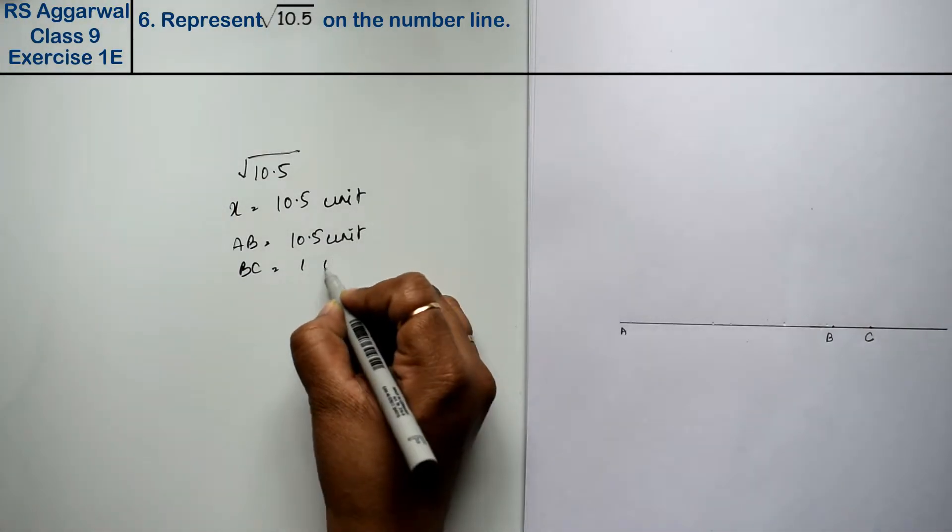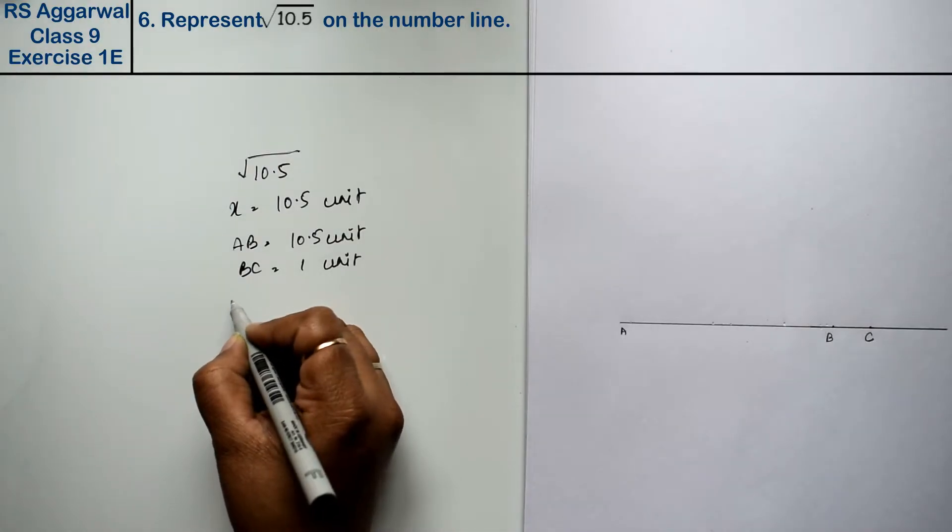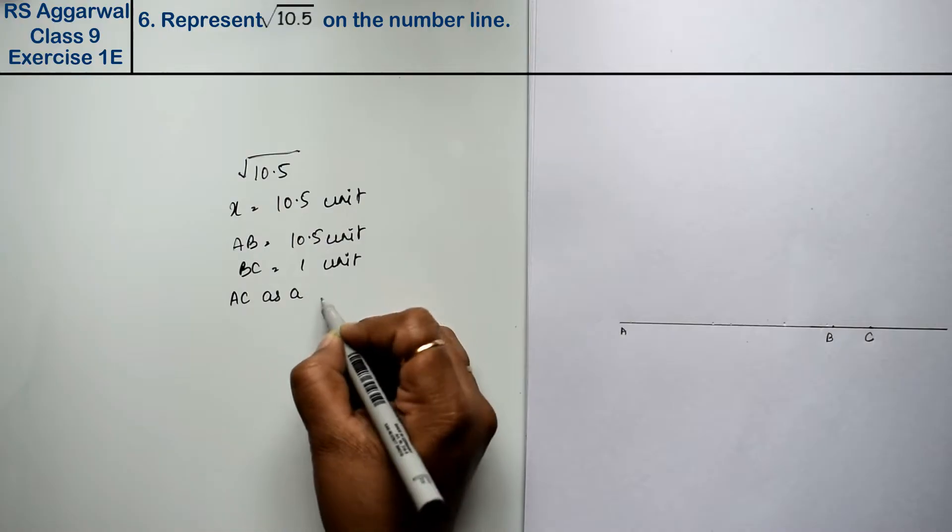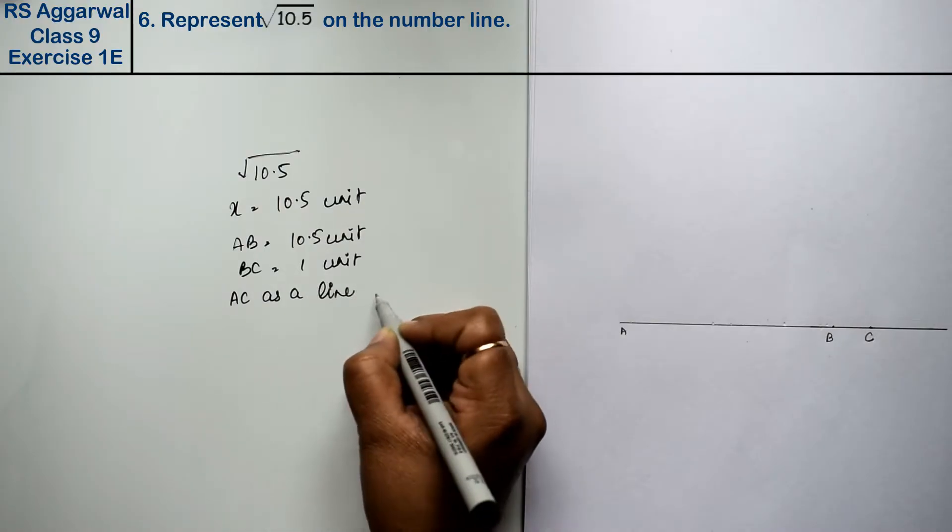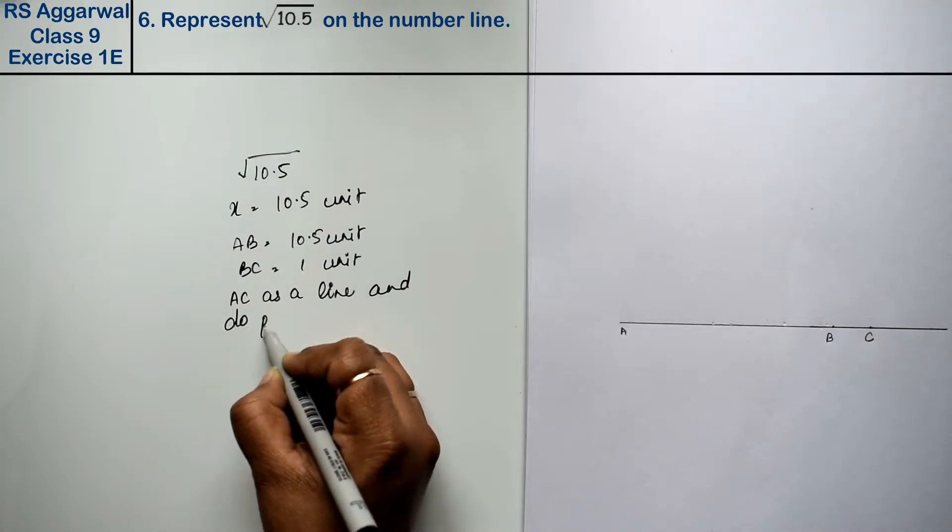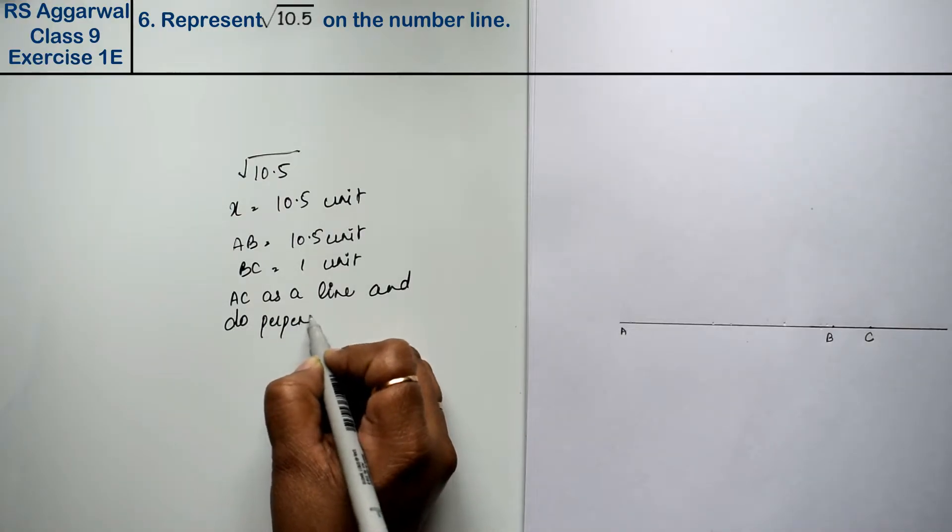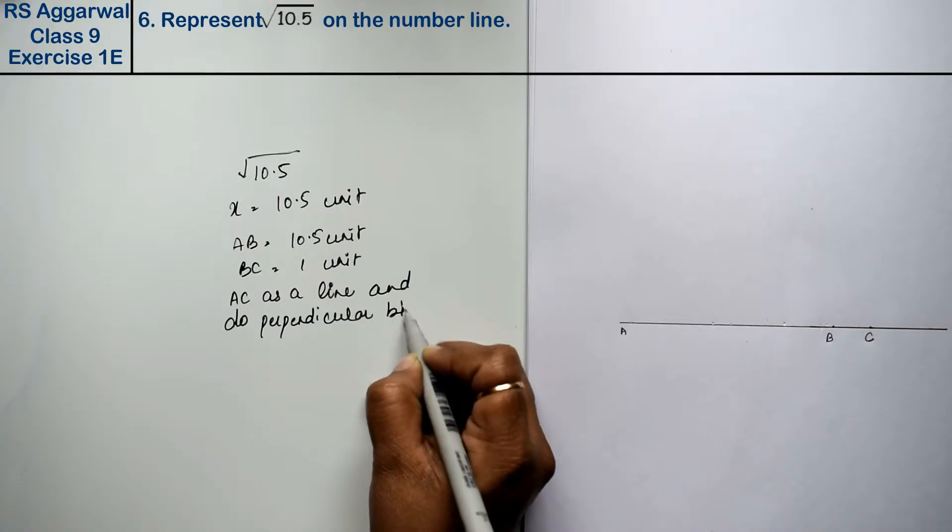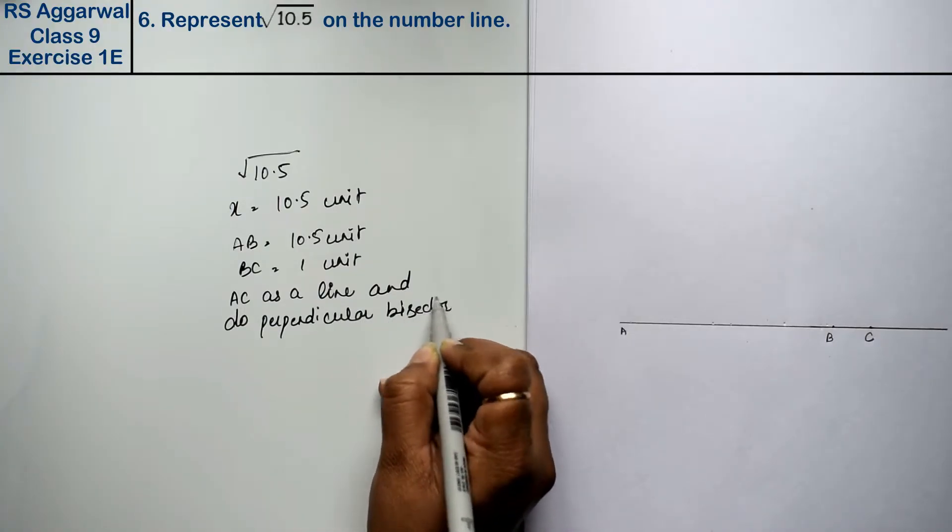Now we will take AC as a line and do perpendicular bisector of that line.